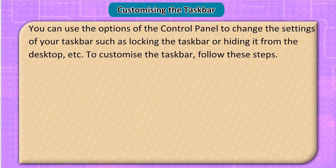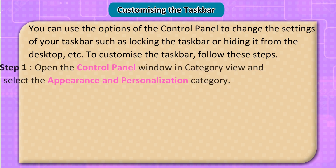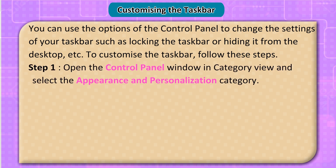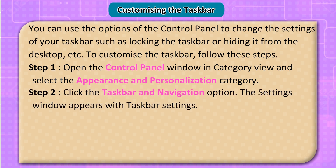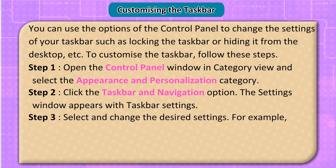To customize the taskbar, follow these steps. Step 1: Open the Control Panel window in Category View and select the Appearance and Personalization category. Step 2: Click the Taskbar and Navigation option. The Settings window appears with Taskbar settings. Step 3: Select and change the desired settings.